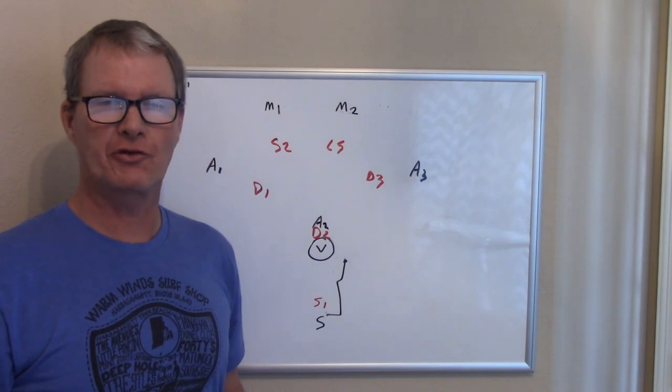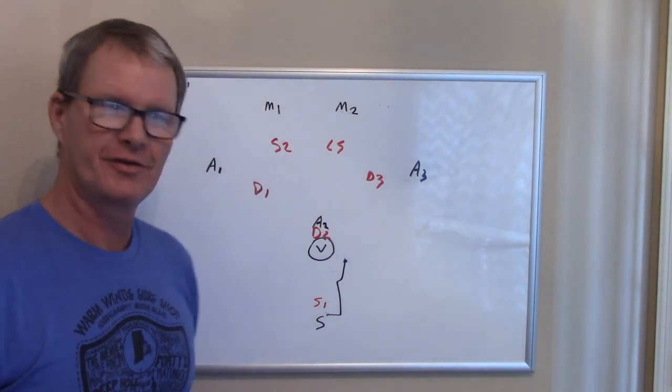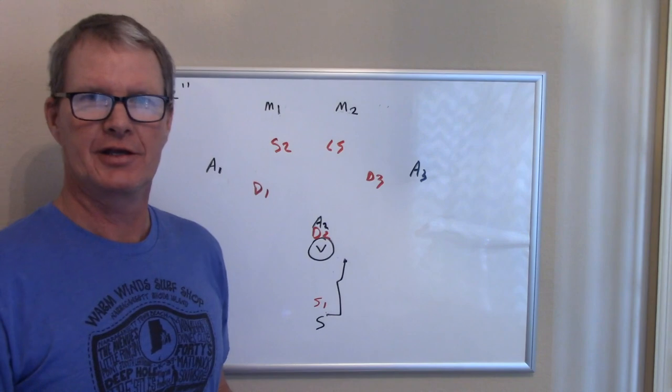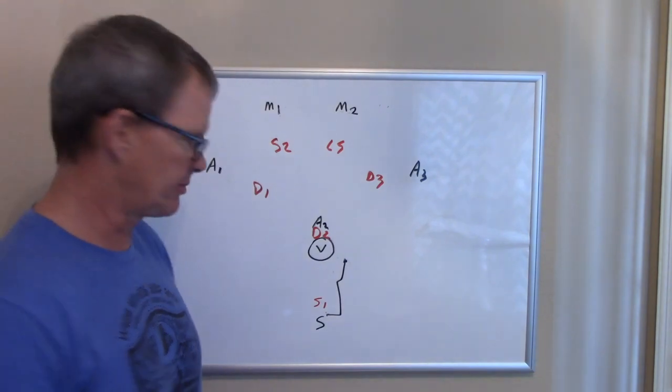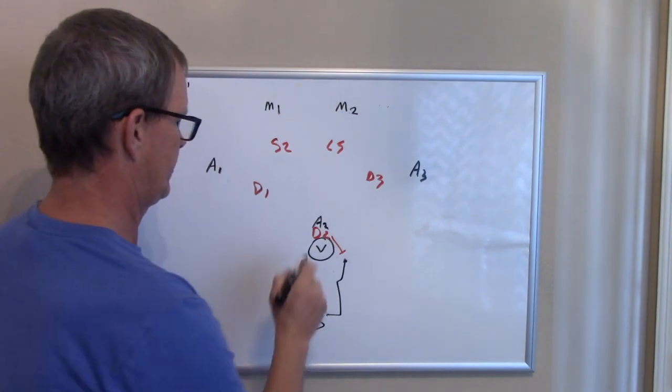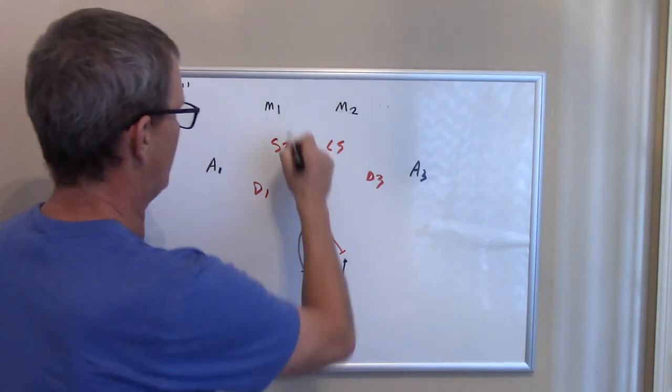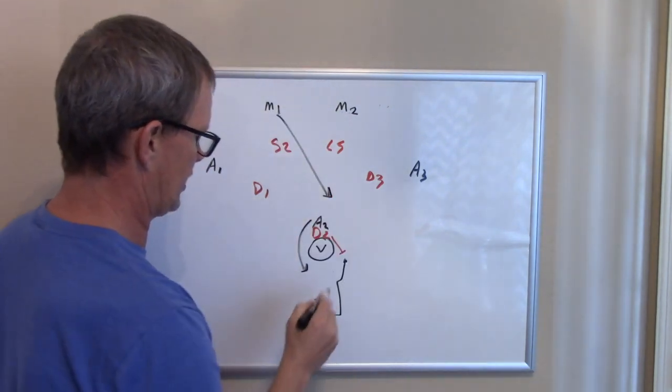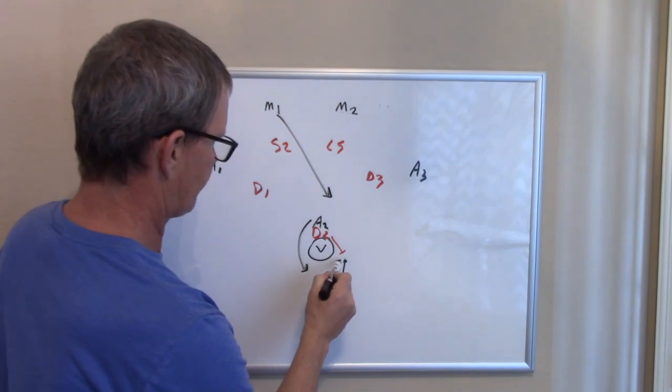The last look I want to show you that you're going to get against the early slide involves throwing it back to the mirror. So let's just say D2 slides, A2 rolls off, M1 makes his cut. We throw back.